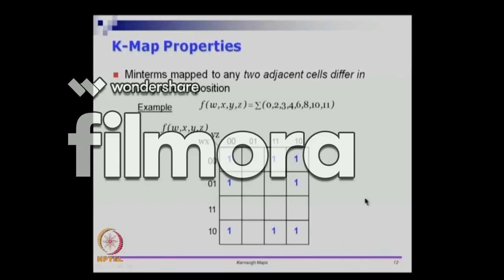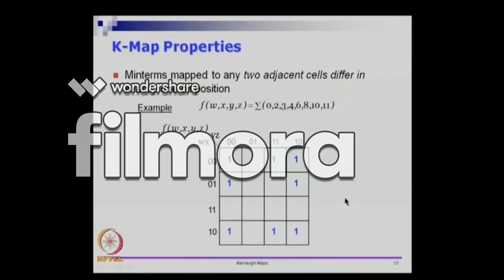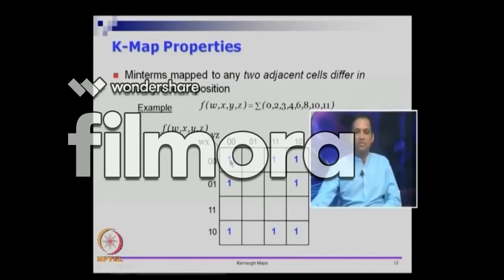Now looking at this table, wxyz is given as a sigma of 0, 2, 3, 4 up to 11. This is a canonical sum of products. Filling it up: positions 0, 2, 3 are on in the first row. The next row is for 4, 5, 6, and 7 — among those, only 4 and 6 are on.